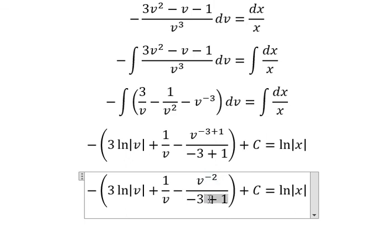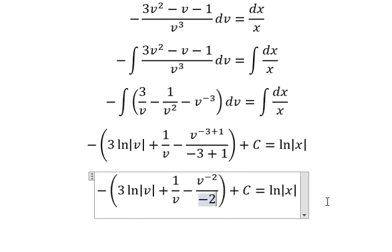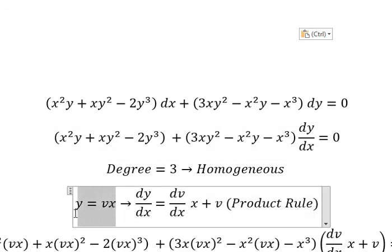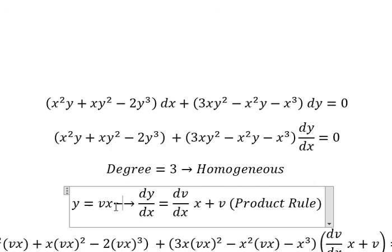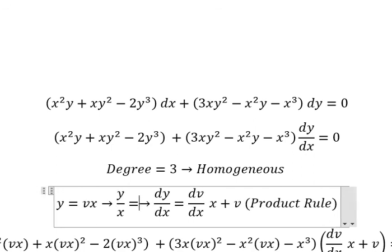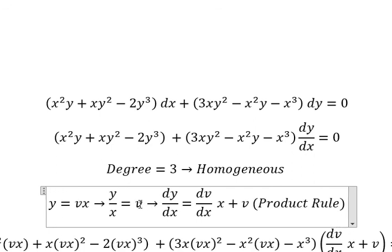About v, that is about this one. So we divide both sides by x. And now we need to change v into this one.